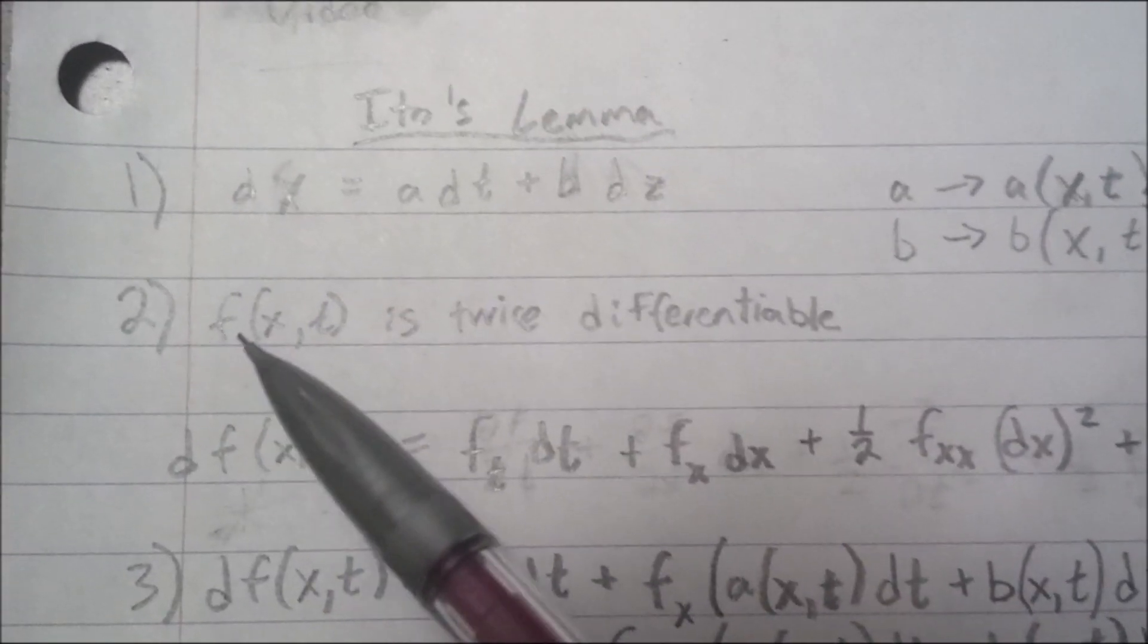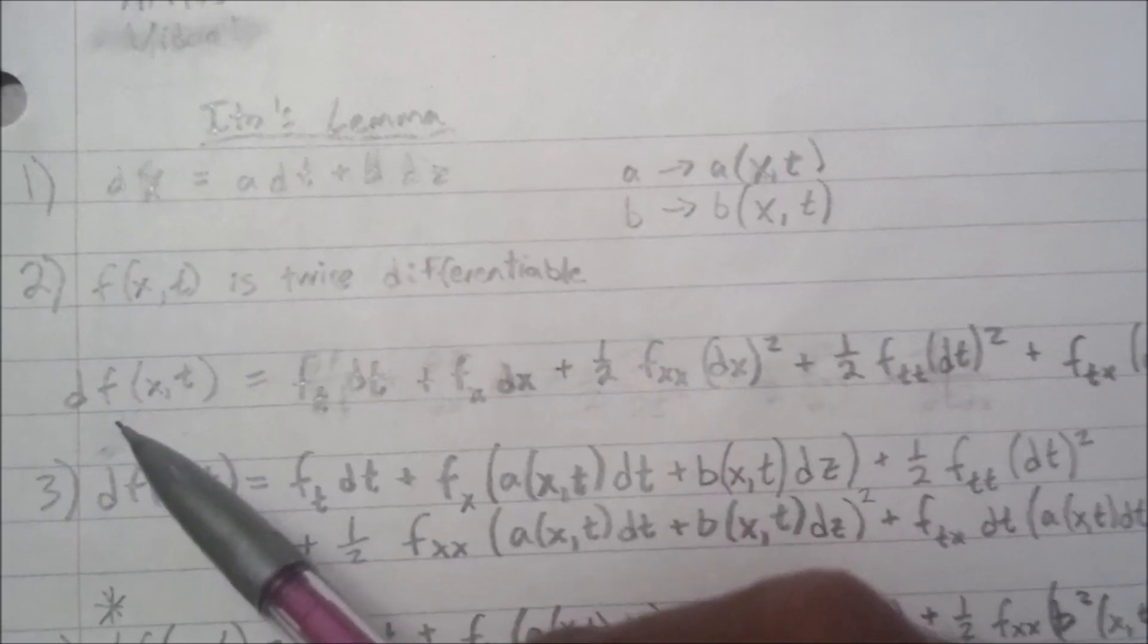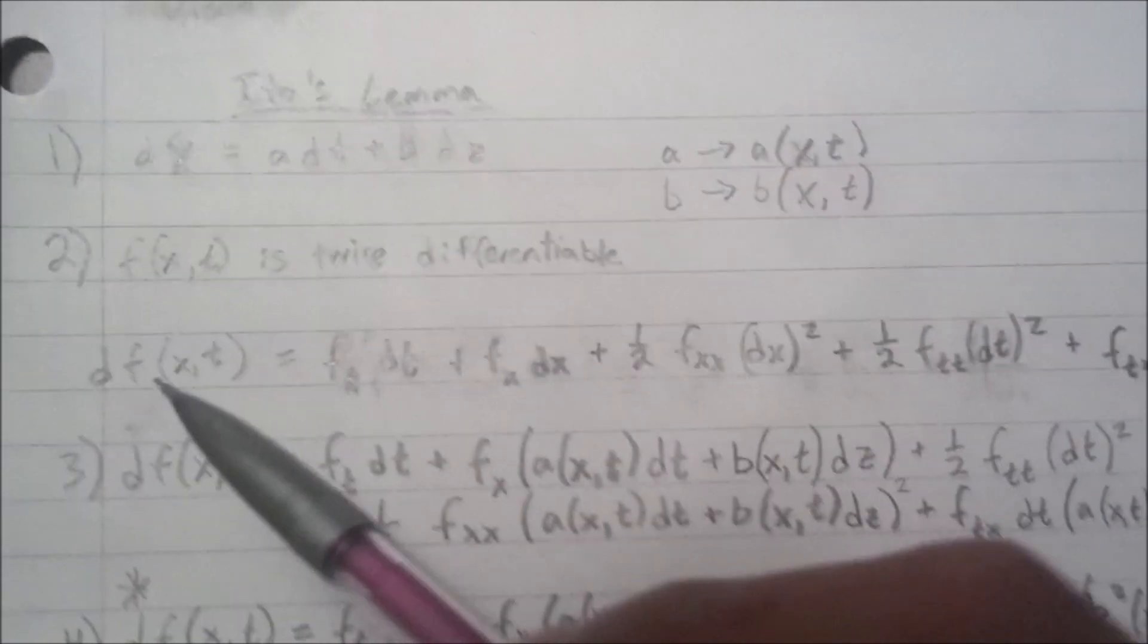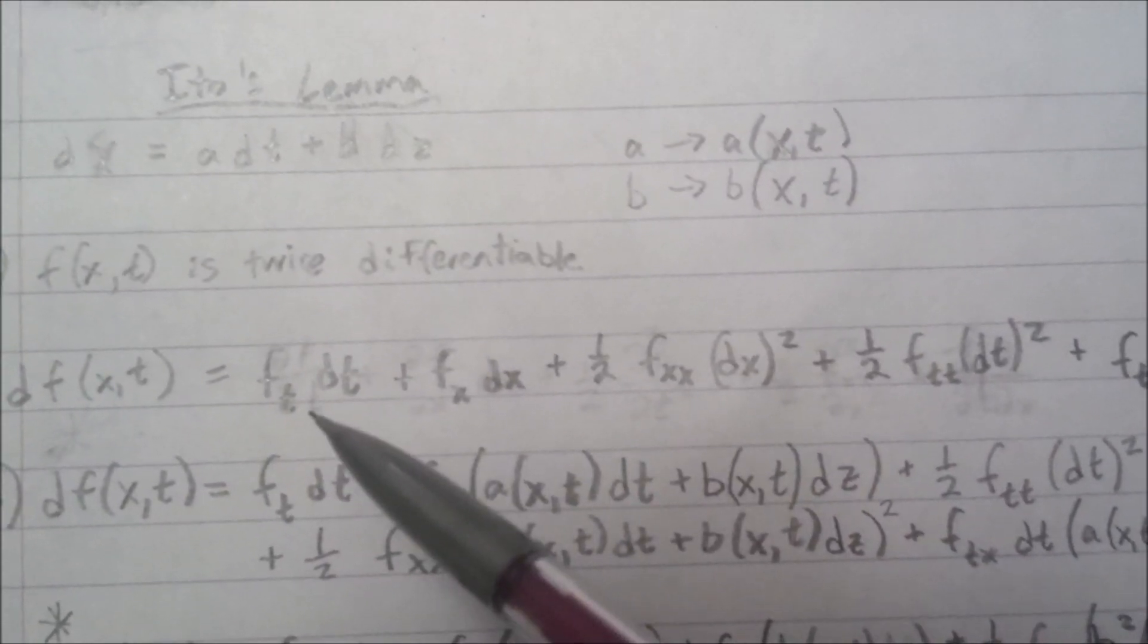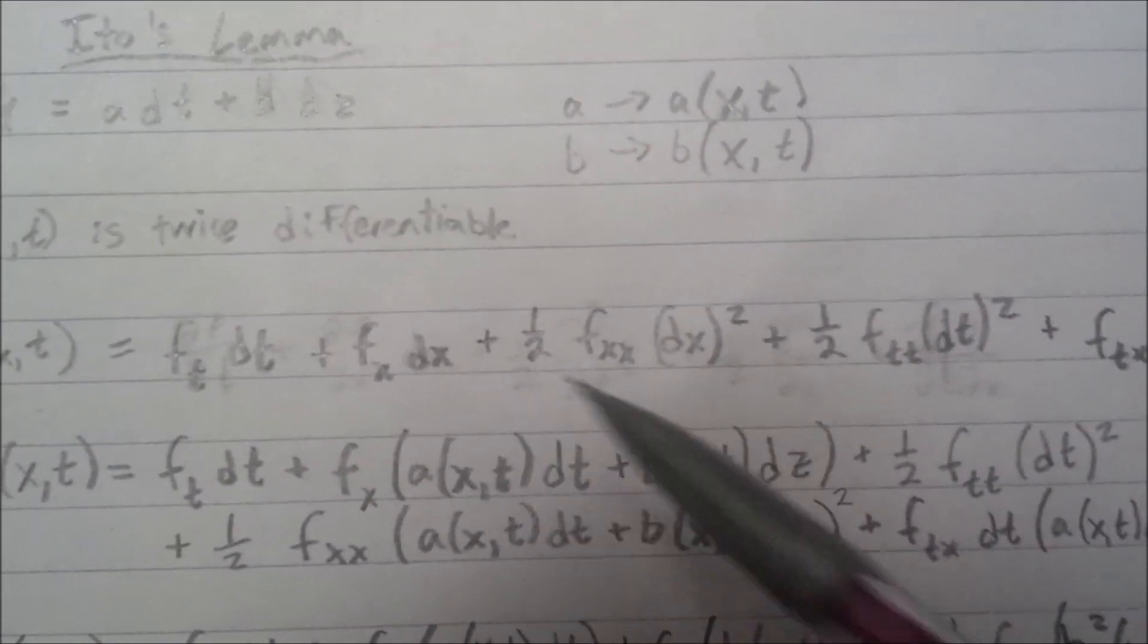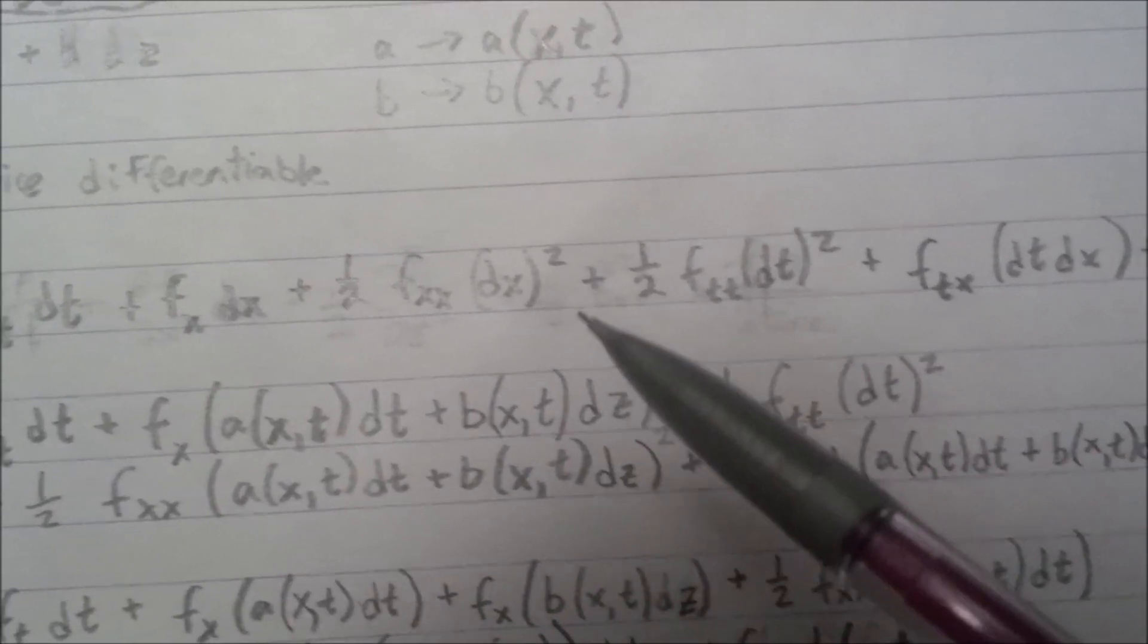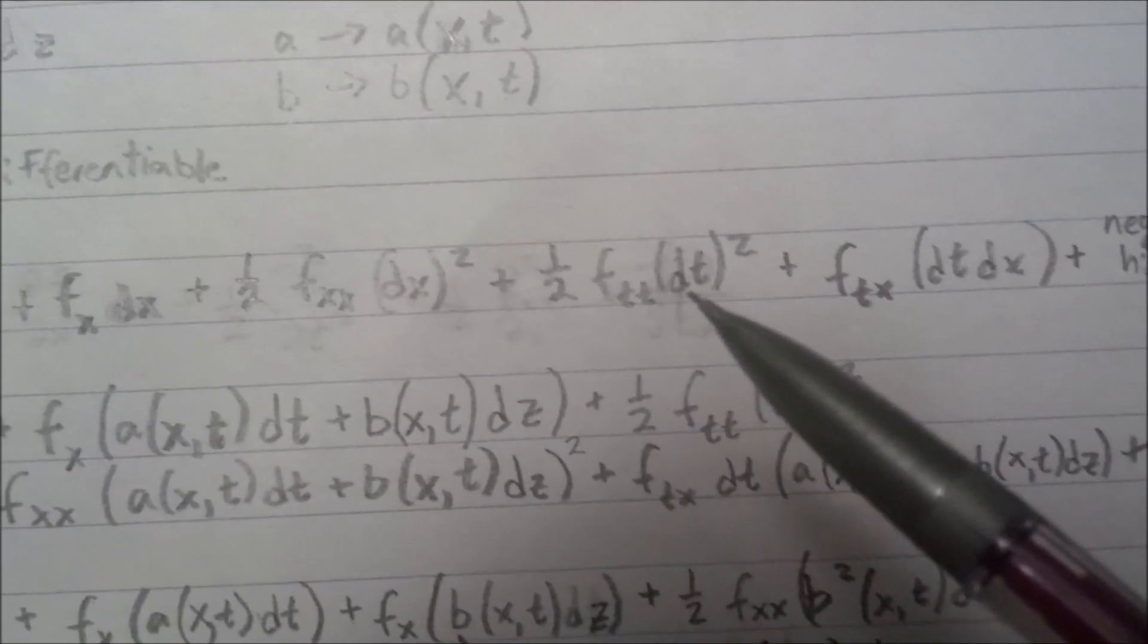Then we have a function of x and t that is twice differentiable. So because of that, we can use our Taylor expansion to expand the differential of our function of x and t, which would be the partial of f with respect to t dt, plus the partial of f with respect to x dx, plus one half the second partial of f with respect to x dx squared, plus one half the second partial of f with respect to t dt squared.